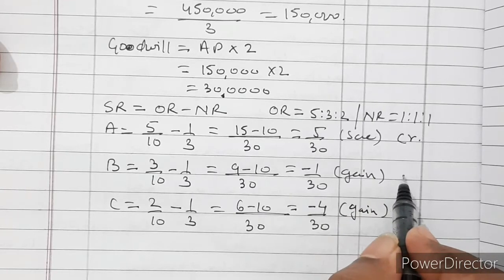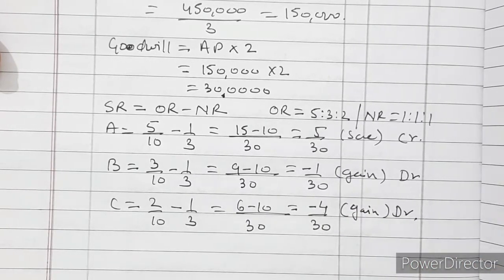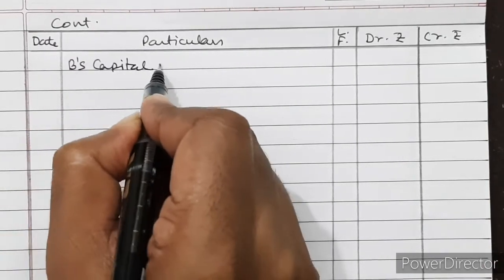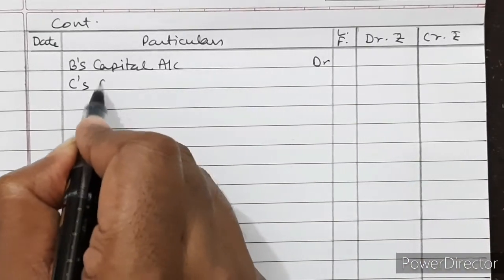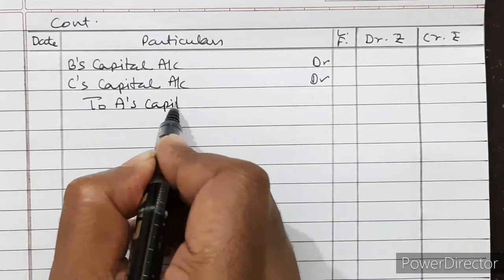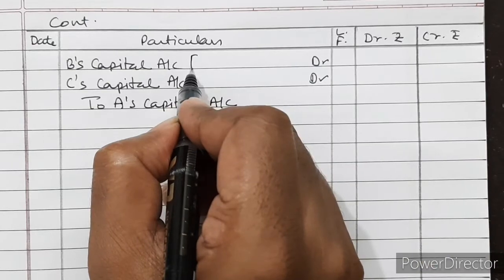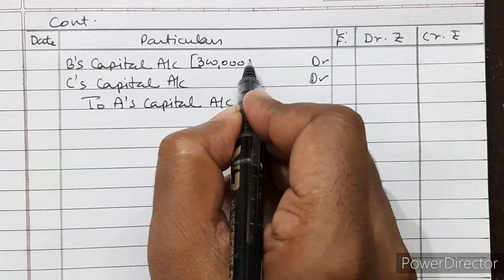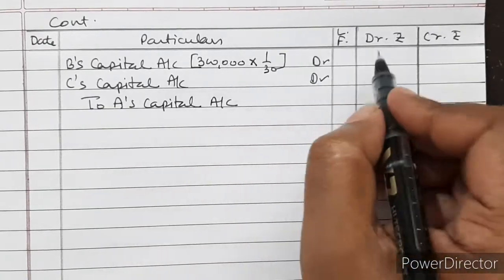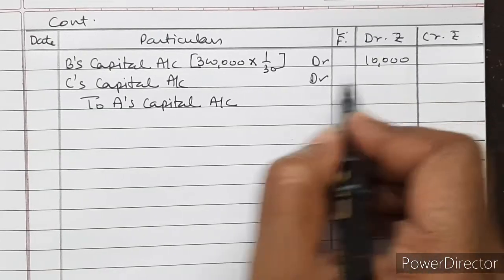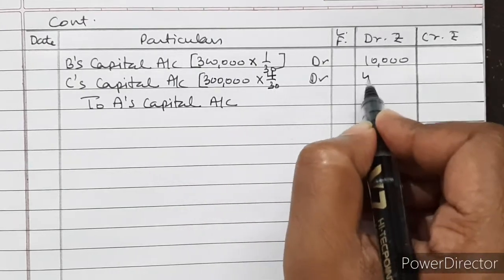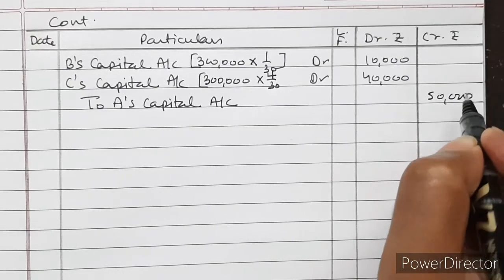Those who sacrifice have their capital account credited; those who gain have their capital account debited. Journal entry for goodwill treatment: B's Capital Account debited and C's Capital Account debited to A's Capital Account. Goodwill is Rs. 3,00,000. B's gaining ratio is 1/30, so B pays Rs. 10,000. C's gaining ratio is 4/30, so C pays Rs. 40,000. A receives Rs. 50,000 total.